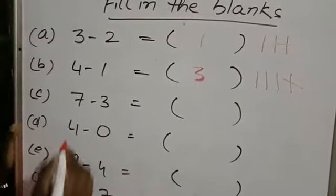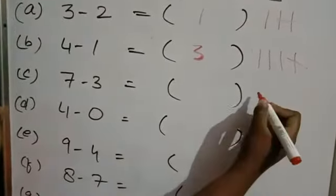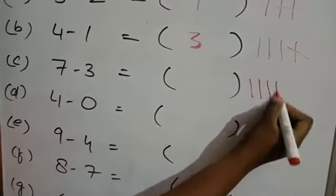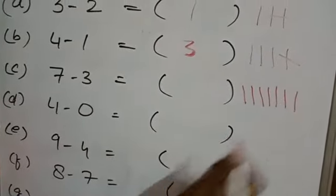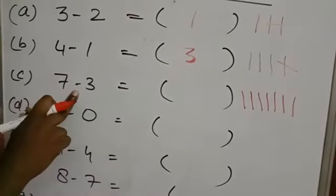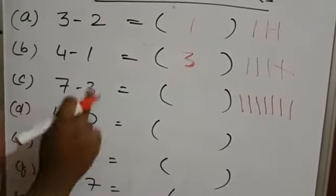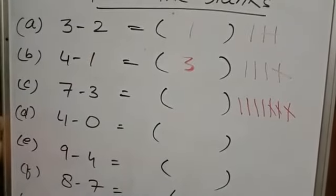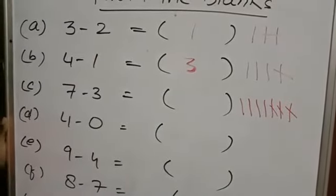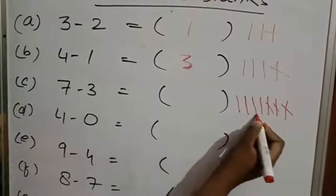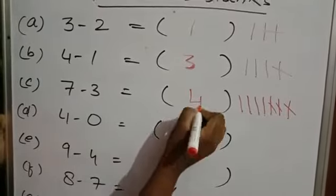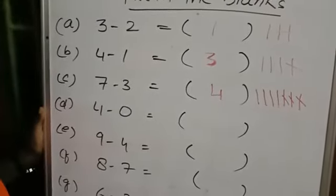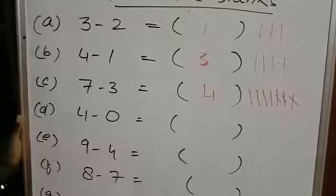Third one: 7 minus 3. Draw 7 lines — 1, 2, 3, 4, 5, 6, 7 — and how many lines do you have to cut? 3. So 1, 2, 3. How many lines are left? 1, 2, 3, 4. So 7 minus 3, the answer is 4.